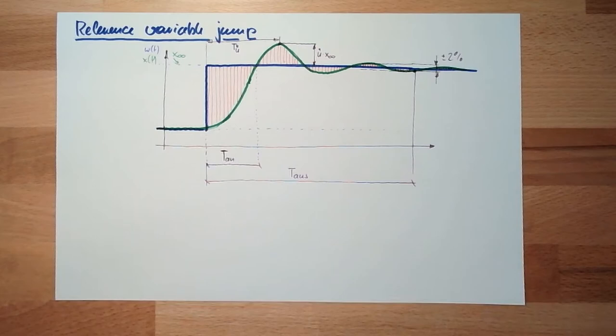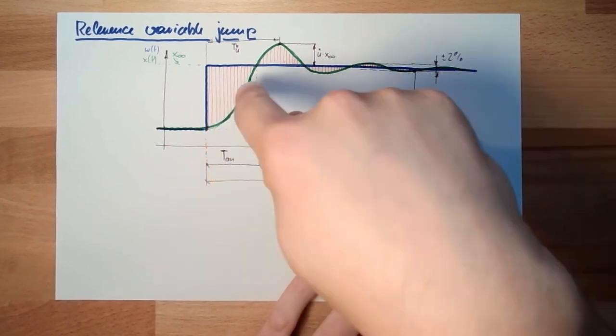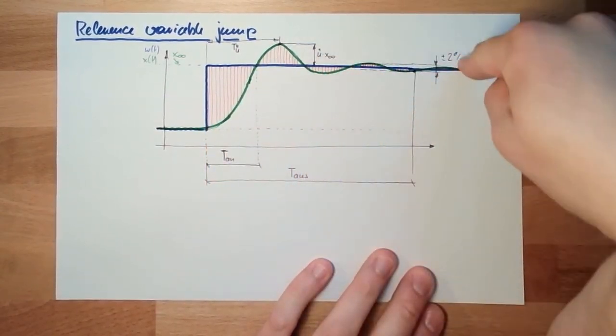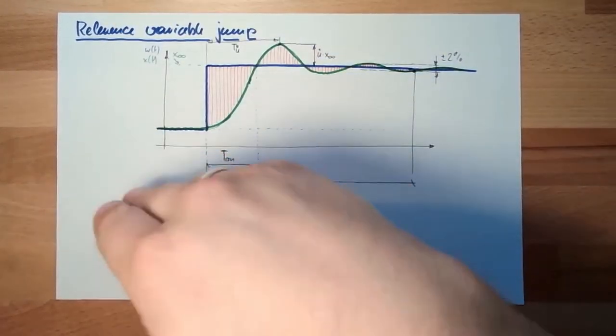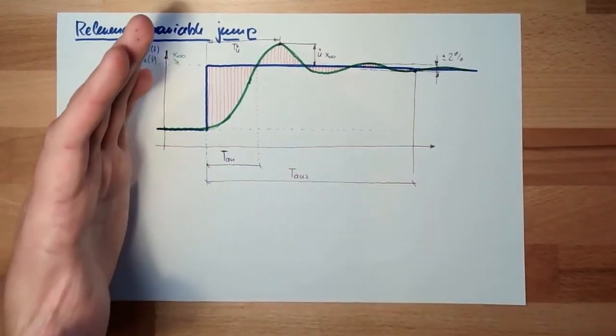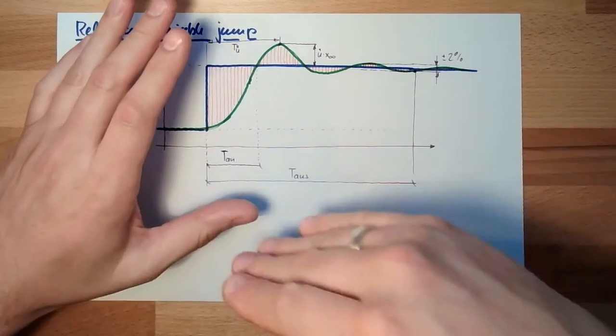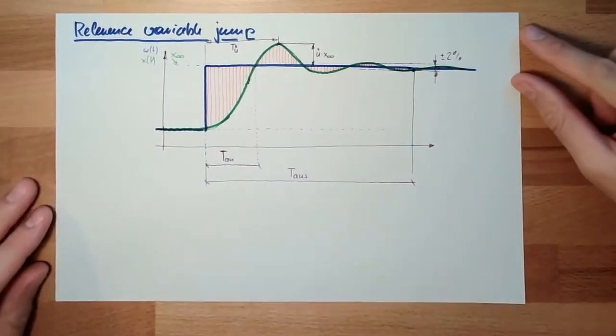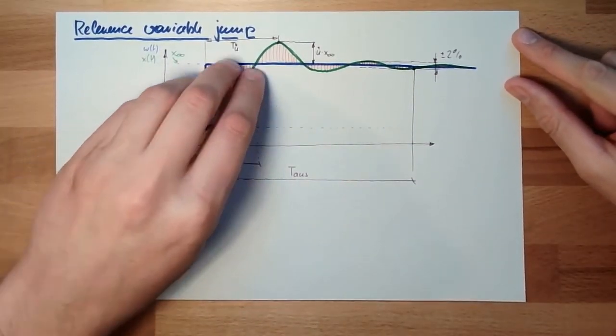However, we cannot just summarize it. Why? Because here the error would be positive, here it's negative, positive, negative, positive, negative. And if we end up in a swing, the error would be summed up zero, would look perfect. But in reality we are swinging. So we need to do something else than just summing up the error.